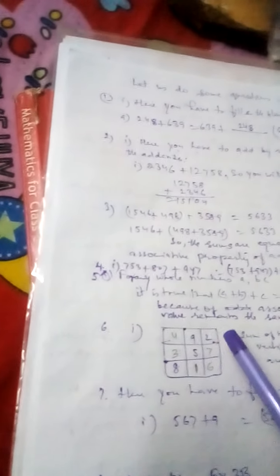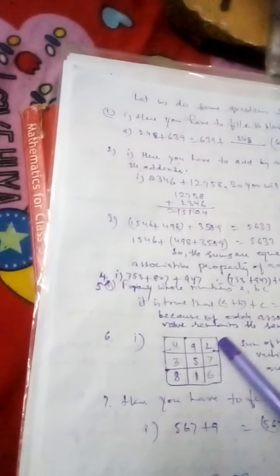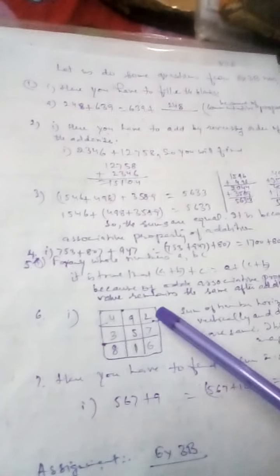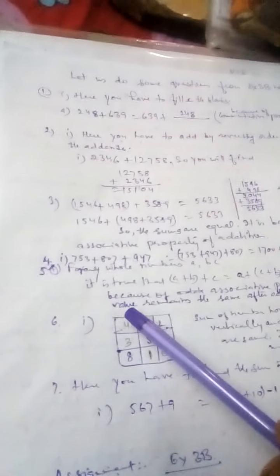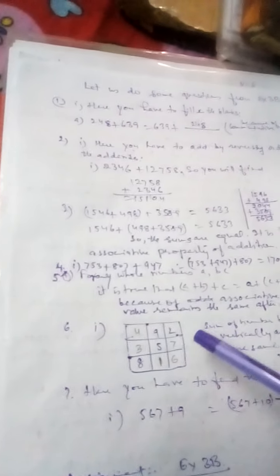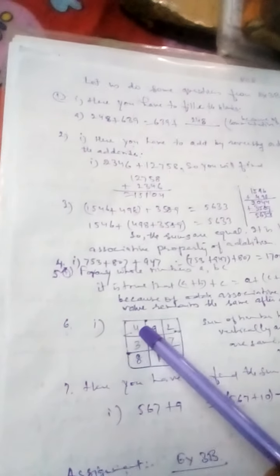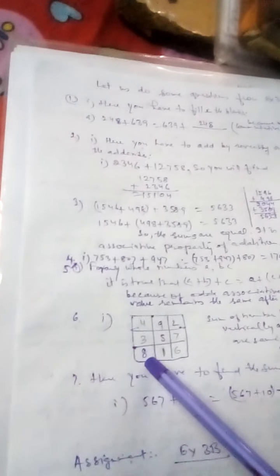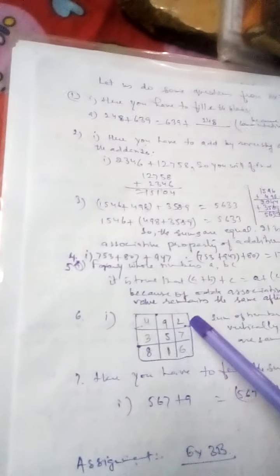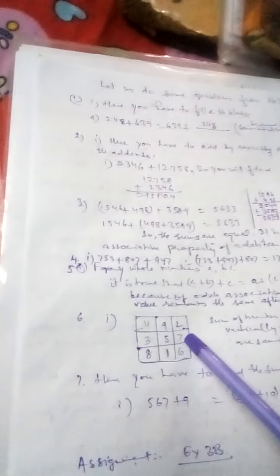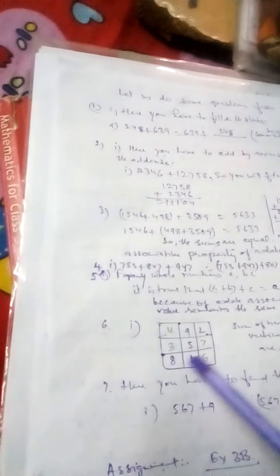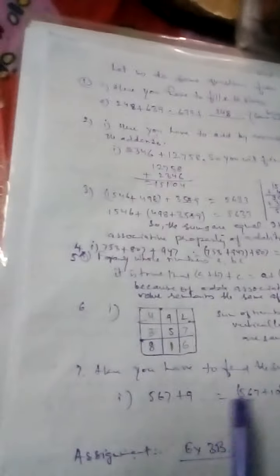Then you go for magic square. Here some numbers are given. You have to find in any way what is the sum of these numbers. Here you can see that 8 plus 5 plus 2, that is 15. And in all the horizontal way or vertical way or diagonally, you must get 15. So here 9 and 2 is 11. If you put 4 here, the value will be 15. In the same way, if you put 3 here, then 4 plus 3 plus 8, again it is 15. If you put 7 here, then 3 plus 5 plus 7, that is 15. And if you put here 6, then you can see that 2 plus 7 plus 6 is 15. So it is called a magic square.